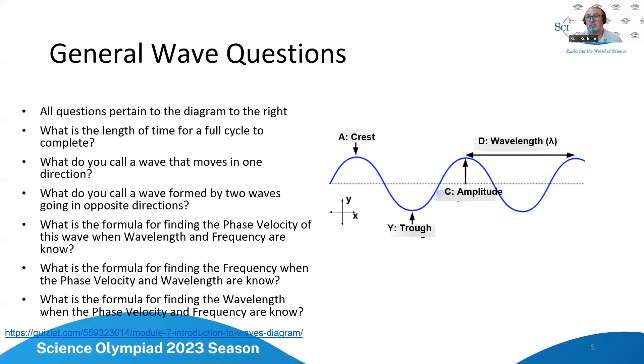So now let's do some other ones. What's the length of time for a full cycle to complete? What do you call a wave that moves in one direction? What do you call a wave formed by two waves going in opposite directions? What is the formula for finding the phase velocity of this wave when wavelength and frequency are known? What is the formula for finding the frequency when phase velocity and wavelength are known? What's the formula for finding the wavelength when the phase velocity and frequency are known?